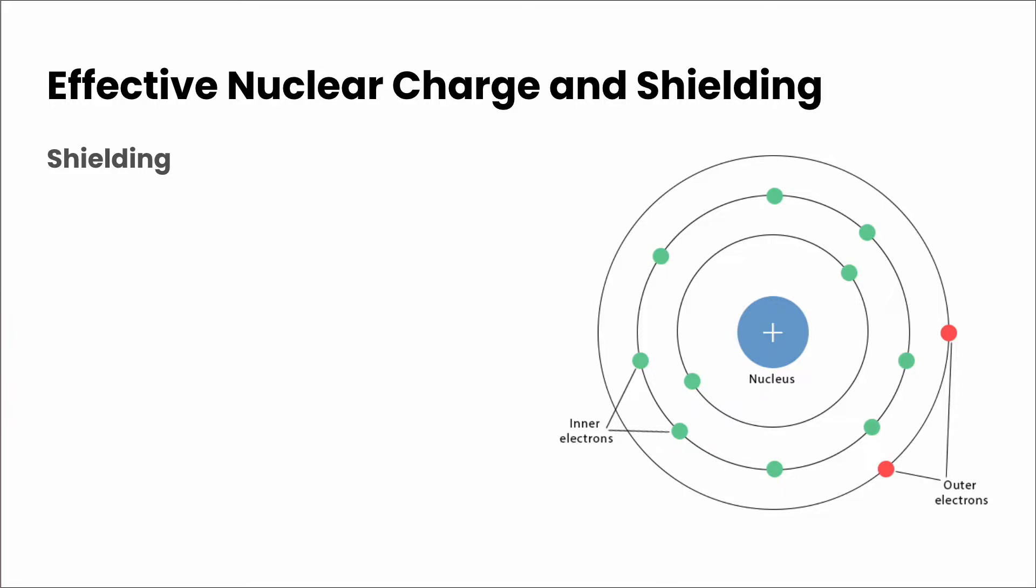So first we need to talk about shielding. If we have an atom, then we know that the negatively charged electrons are attracted to the positively charged nucleus. But we also need to keep in mind that the valence electrons are also repelled by the other electrons in the atom. So we've got some different attractions and repulsions going on in our particular atom.